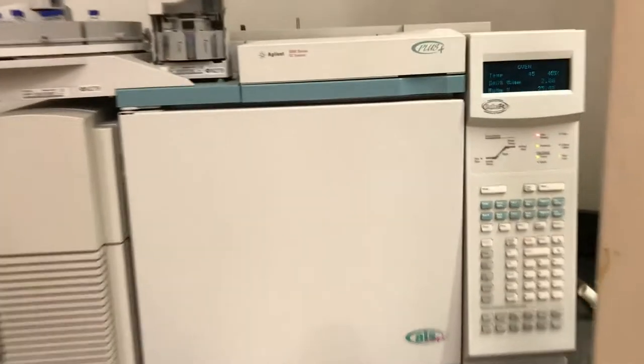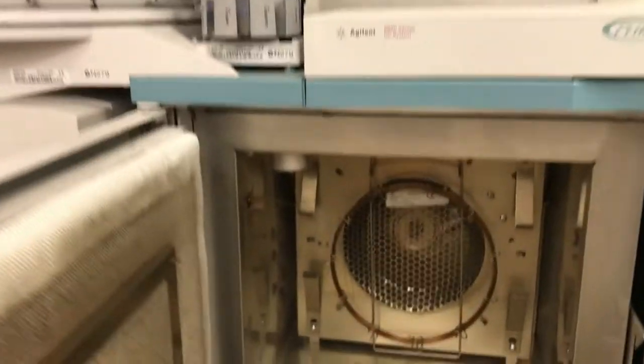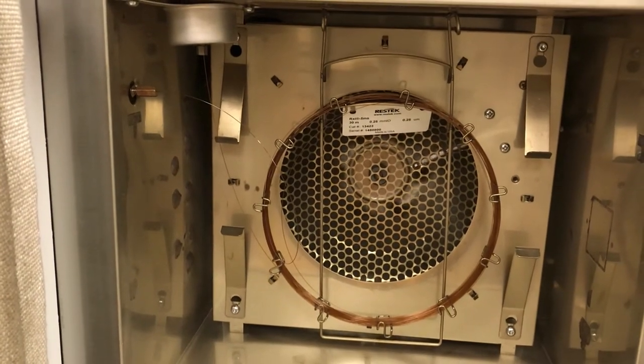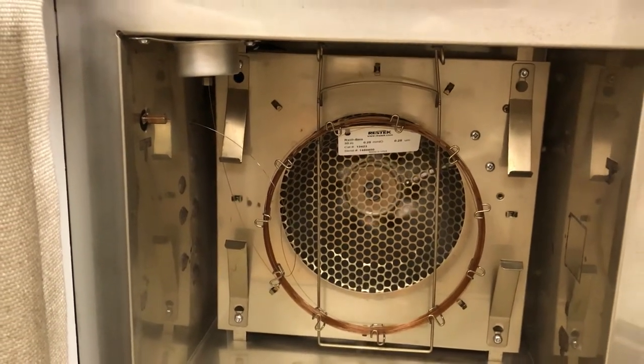So here is our GC instrument and I first want to show you the inside. That coil that looks like a copper wire, very thin coil wrapped up, that's the GC column. That's a hollow tube filled with an absorbent and it's 30 meters long normally.